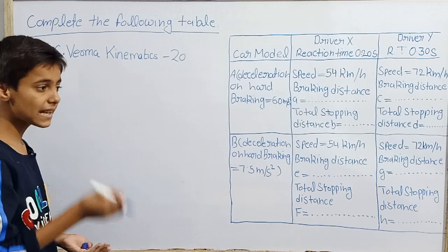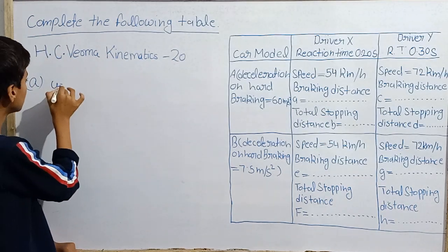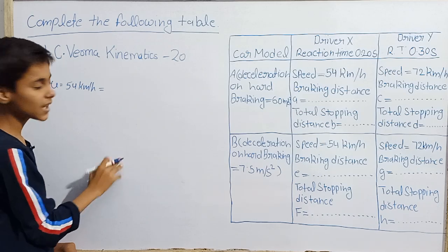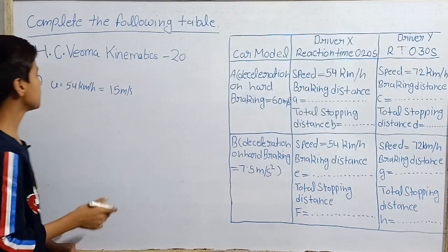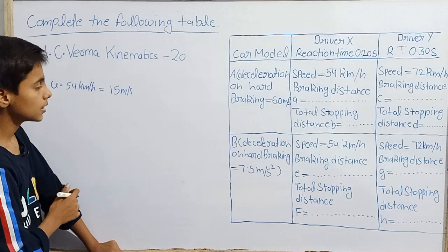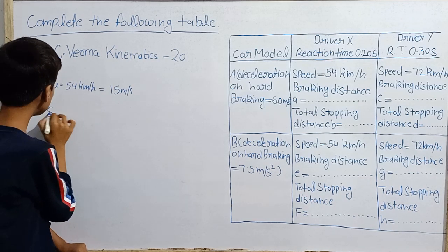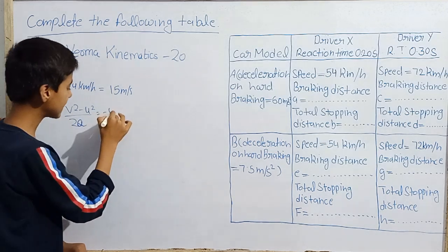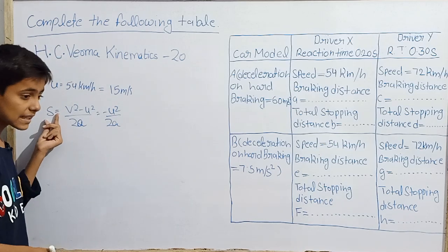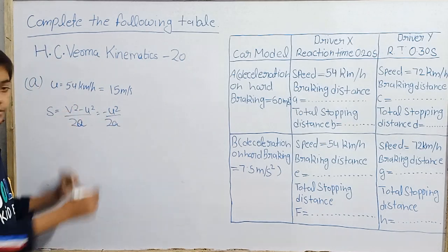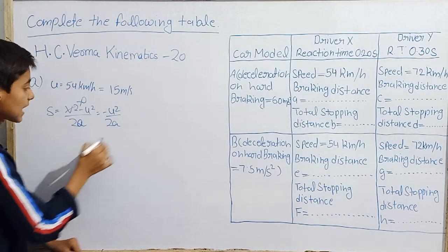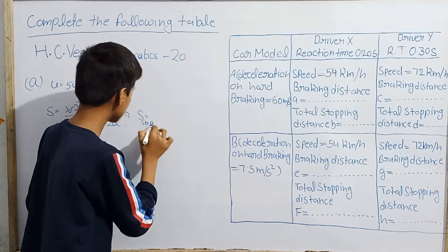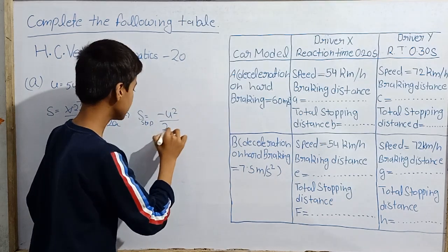Let me tell you the braking distance formula. After braking, the distance traveled is given by S = v² − u² / 2a. Since the car finally comes to rest, v = 0, so S = −u² / 2a. This formula is valid for all cases — all cars, all drivers. So for stopping distance we use S = −u² / 2a.